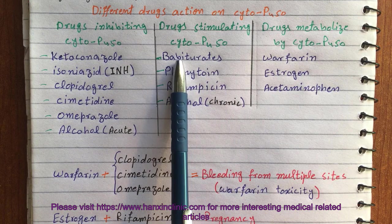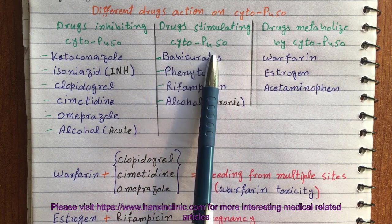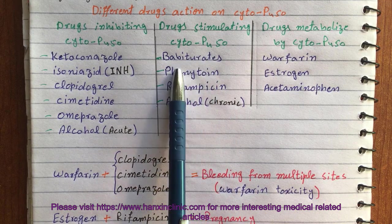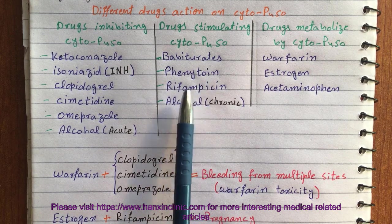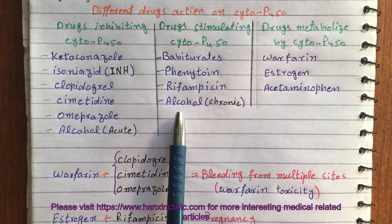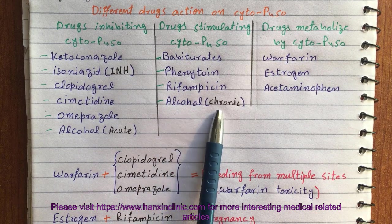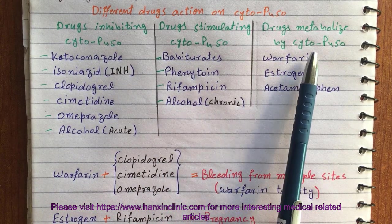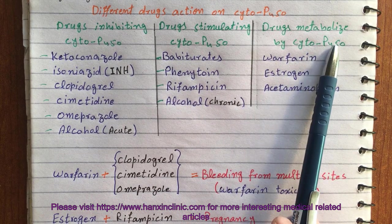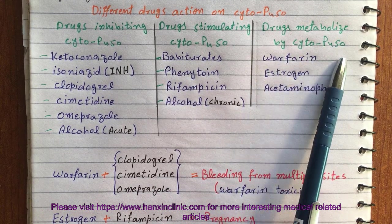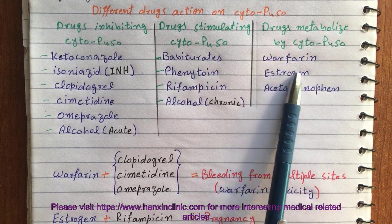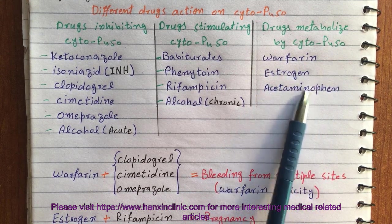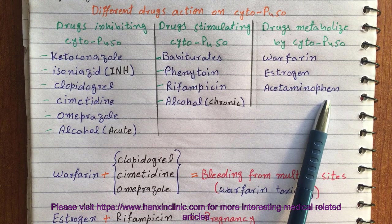The drugs stimulating cytochrome P450 enzymes are barbiturates, phenytoin, rifampicin, and alcohol — but here it is chronic alcohol. The drugs which are metabolized by cytochrome P450 enzyme are warfarin, estrogen, and acetaminophen.